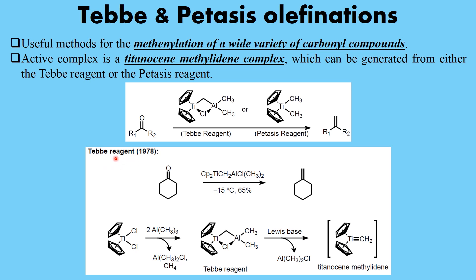In 1978, when Takai reagent was first discovered and synthesized, it was used on cyclohexanone, which was converted into its respective product. To synthesize the Takai reagent — something important to know for exams — titanocene dichloride and trimethylaluminium can be given, and you should recognize that this combination gives rise to Takai reagent.